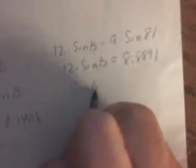12 times sine B, then figure out what 8.889. And then sine B is 8.8891 divided by 12, and then sine B is 0.7408.